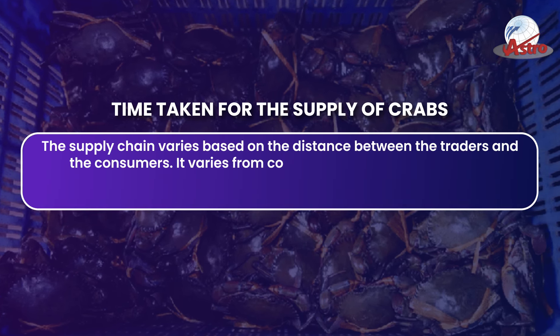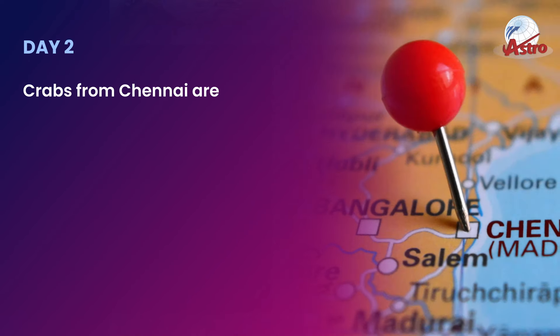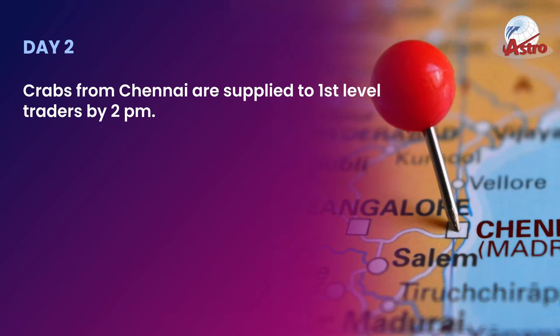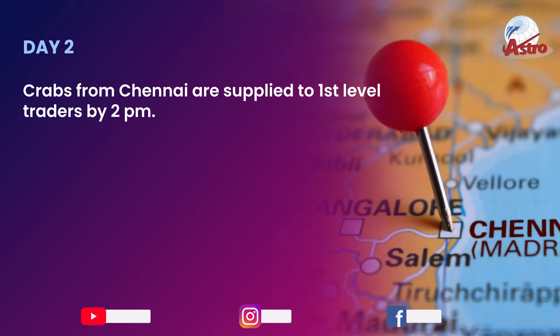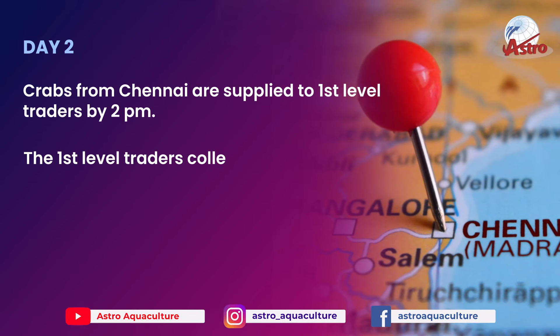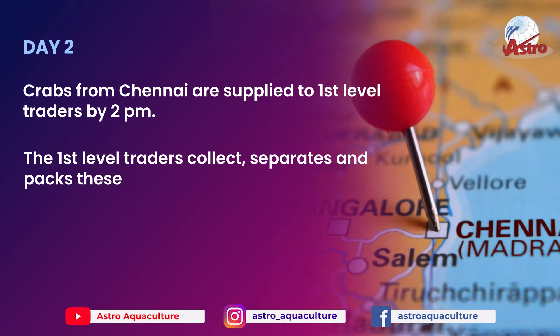Water crabs are widely caught on full moon days. Most crabs undergo molting on full moon days, and this affects the supply and fishing of meat crabs.